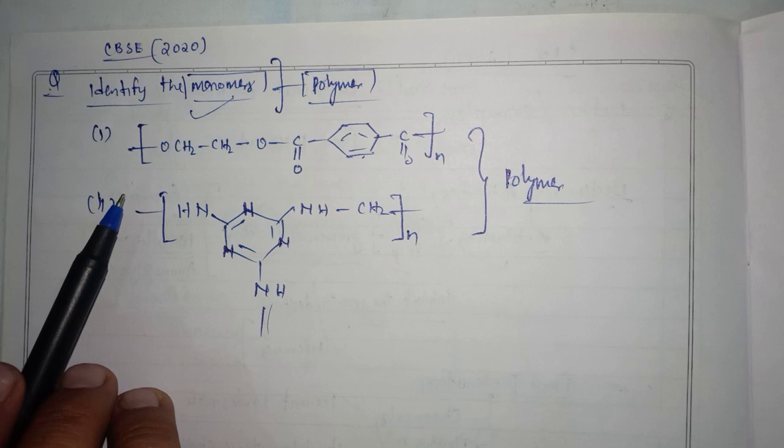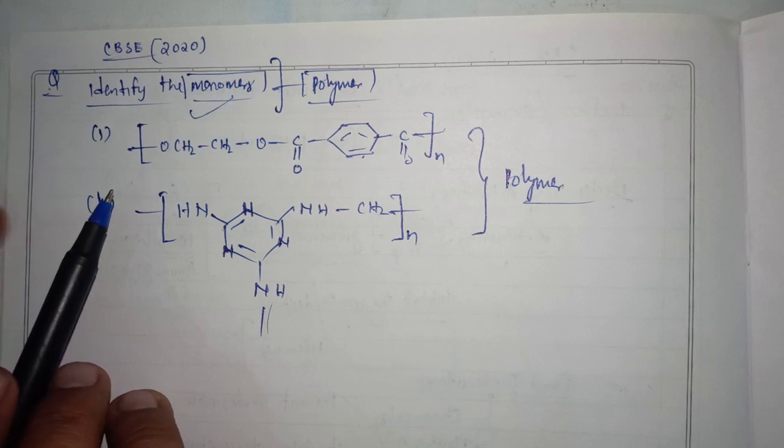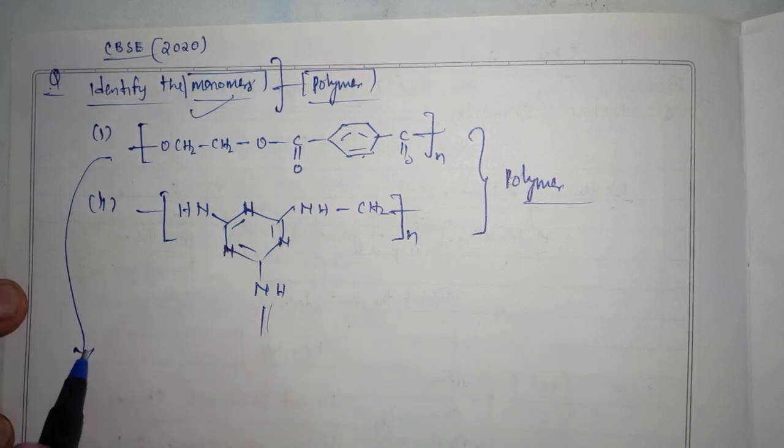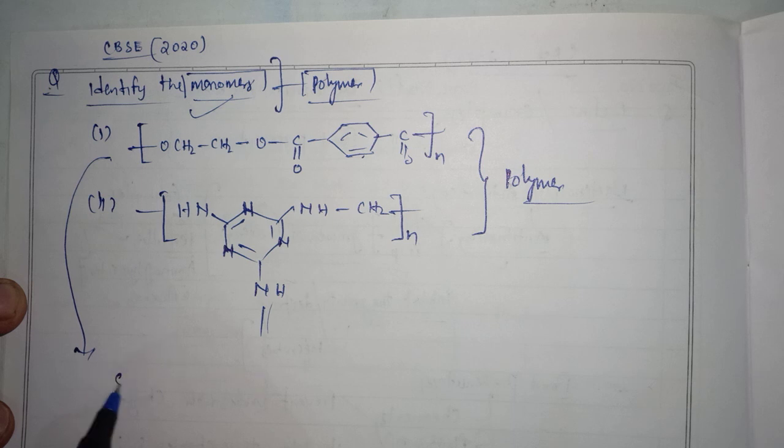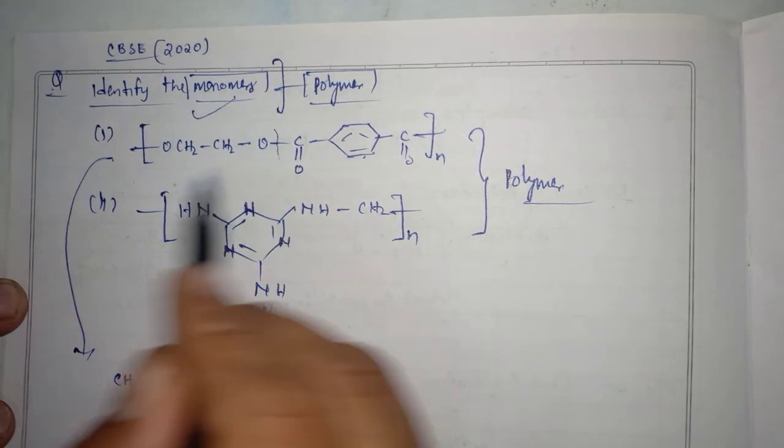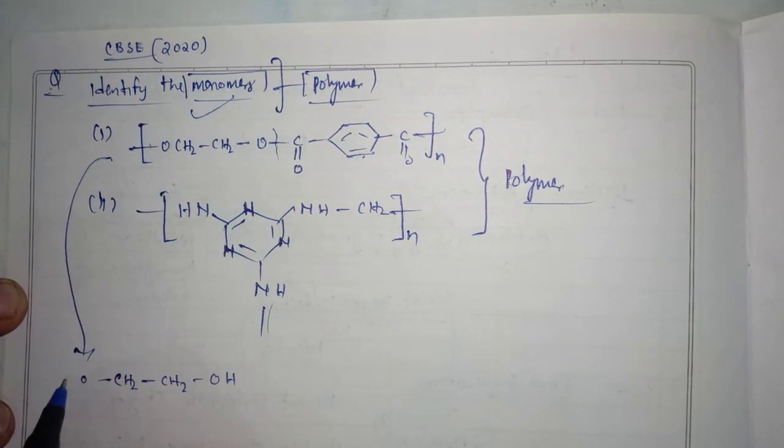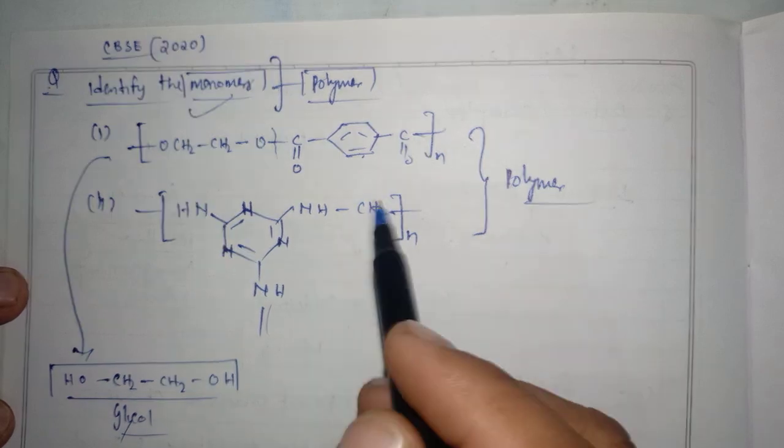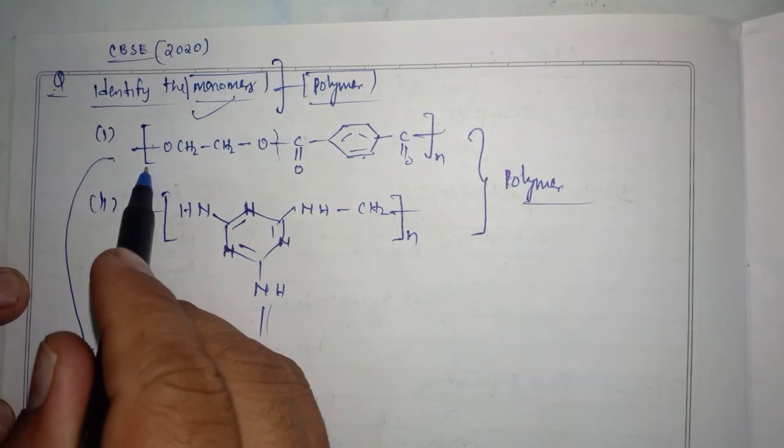So let us see the first case. If we try to observe, we observe that there is a presence of glycol, that is CH2, CH2, O, H here, O, H both the side. It is called glycol.